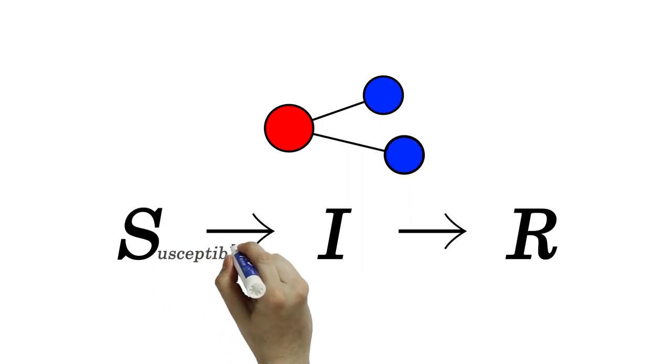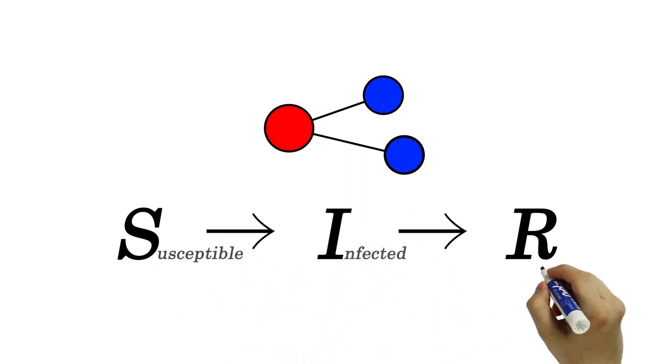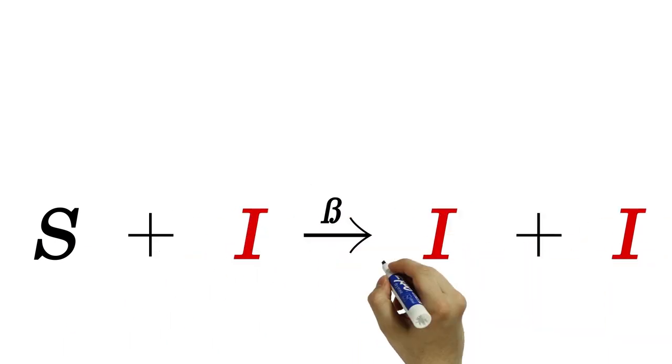Each node state can change from susceptible to infected to recovered. Disease transmission happens at a rate of beta.